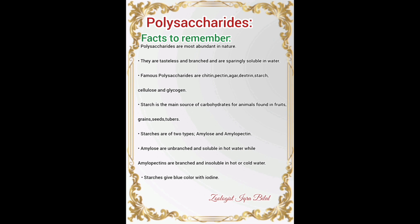Starch is of two types: amylose and amylopectin. Amylose is unbranched and soluble in hot water, while amylopectin is branched and insoluble in both hot and cold water — this distinction is very important to remember.